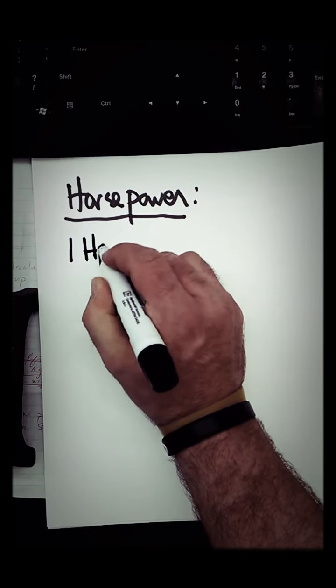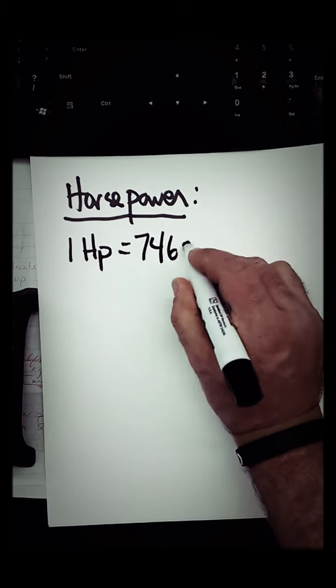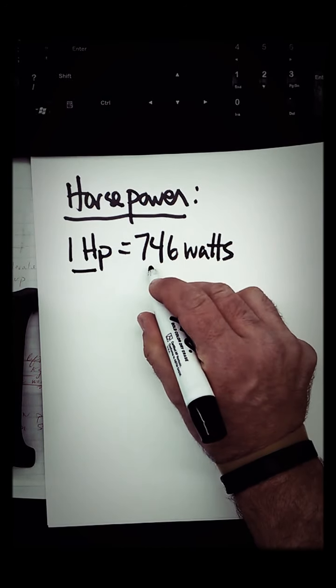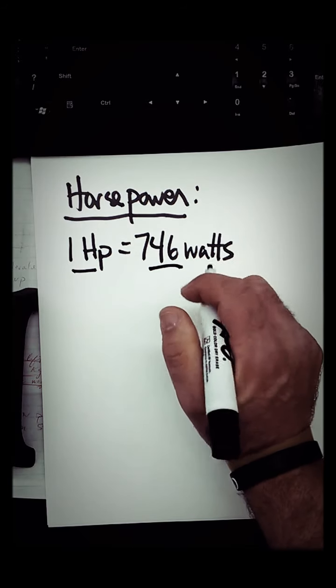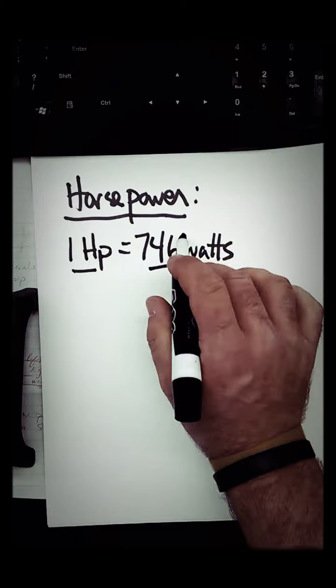So I'm going to tell you what the unit conversion is. One horsepower is equal to 746 watts. This is an English unit. Watts are a metric unit. So we're going from English to metric, metric to English.